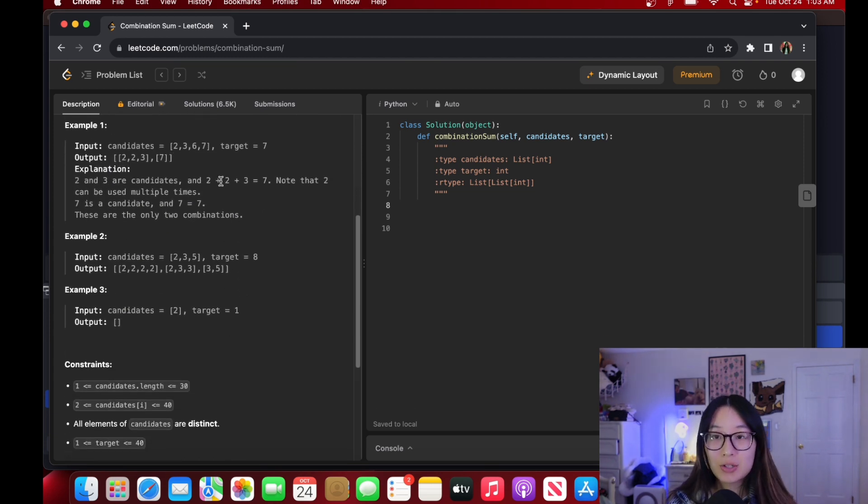We have candidates 2, 3, 6, and 7, and our target is 7. So we need to find ways to create 7 out of these numbers and we are allowed to reuse numbers. We have 2, 2, 3 and we have 7, and these will make 7. So we return both combinations.